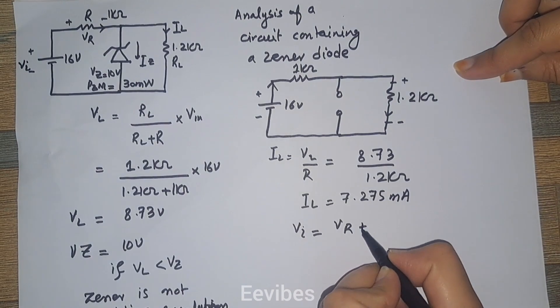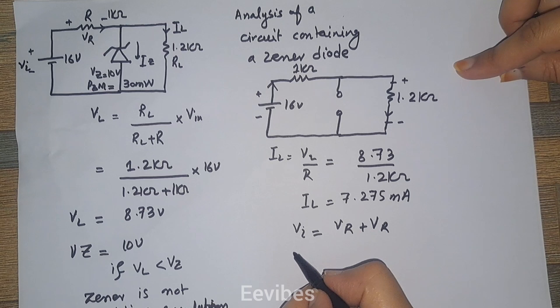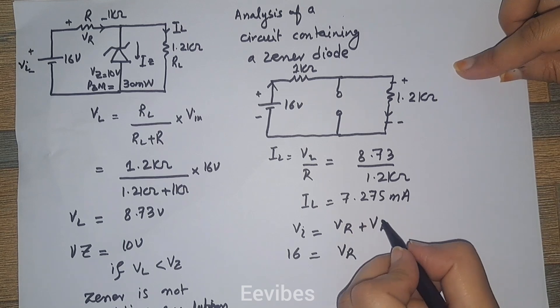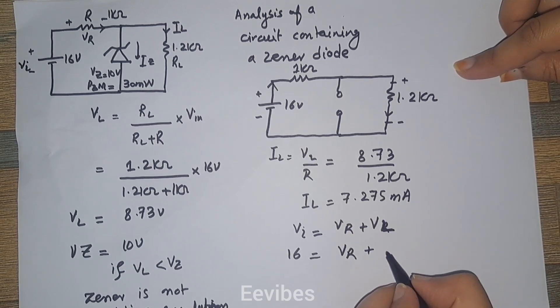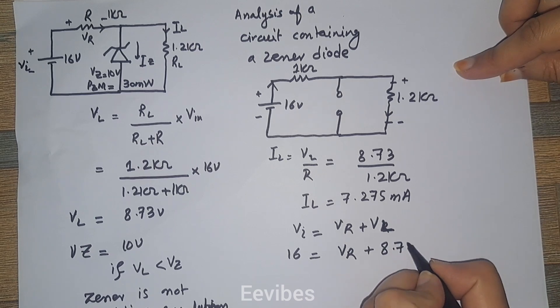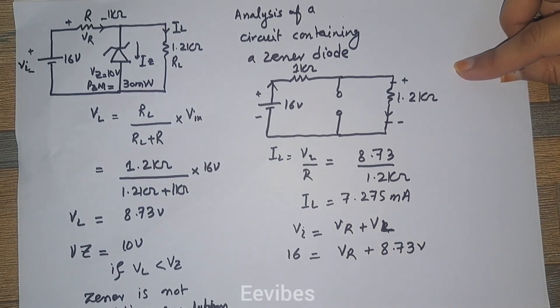We know the value of Vin which equals 16 volts. We're interested in determining the value of VR, and we have the value of VL which equals 8.73 volts. So let's simplify it. You will get the value of VR equal to 7.27 volts.